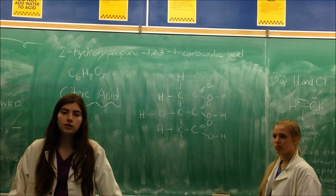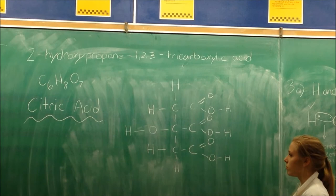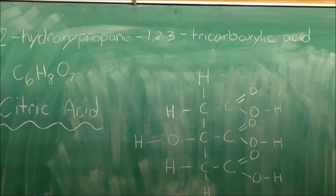So the IUPAC name for it is 2-hydroxypropane-1,2,3-tricarboxylic acid. Its molecular formula is C6H8O7 and its common name is citric acid. And this is the structural diagram.